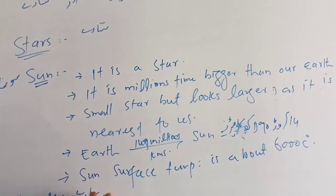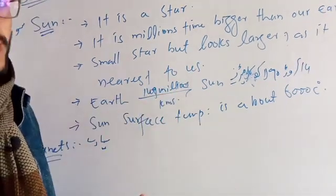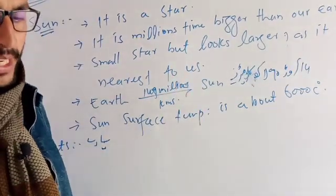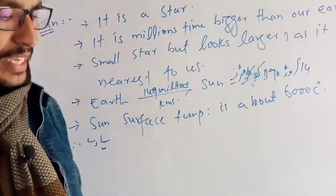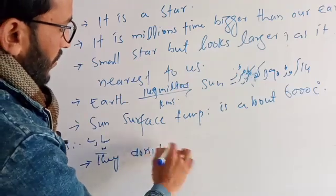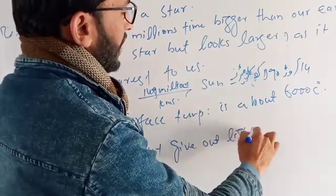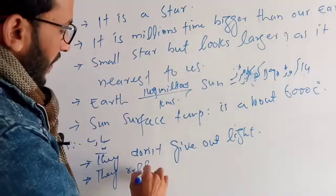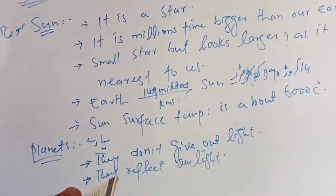The planets of the solar system — have you ever seen other planets in the sky? Planets do not give out light like stars. They do not emit light; instead they reflect sunlight, and therefore we can see them.